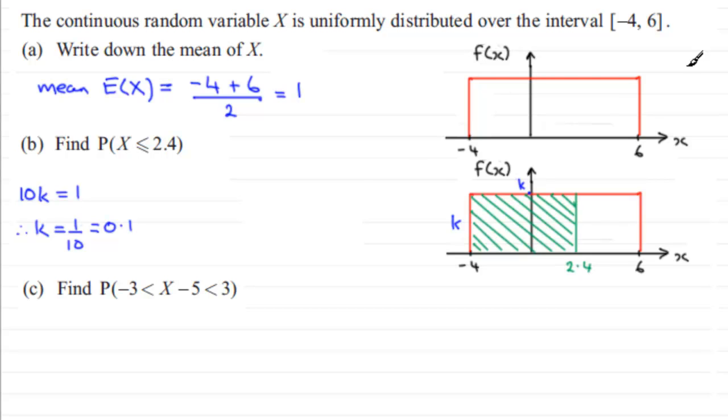Now we're in a good position then to work out the probability of X being less than or equal to 2.4 because all we've got to do now is just work out that area. That area is going to be from minus 4 to 2.4 - that length there is 6.4 units - so we've got 6.4 multiplied by k.